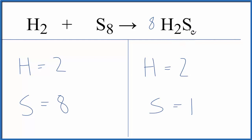And now I have 1 times 8. That gives me 8 sulfurs, but this 8 applies to everything, so the hydrogens, 2 times 8, that equals 16 hydrogens.